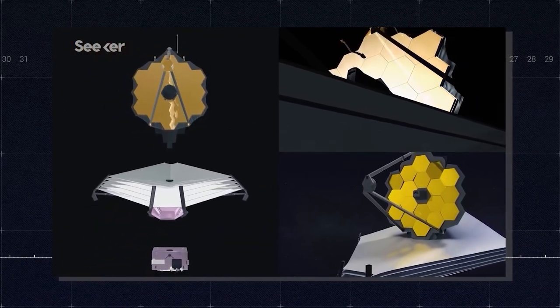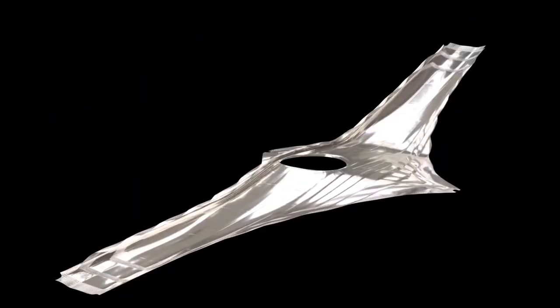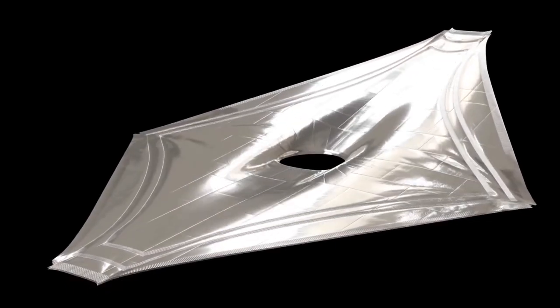However, this reflecting surface, made up of almost 18 segments, is so big that it had to be folded to go inside the nose cone of the Ariane.